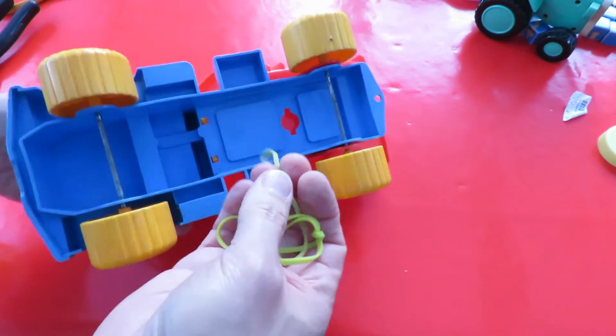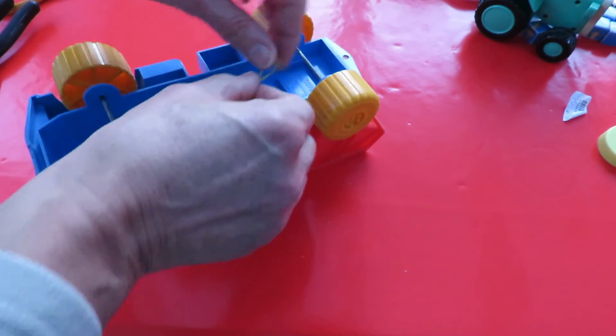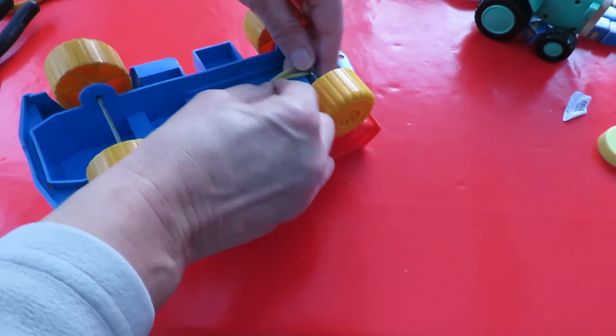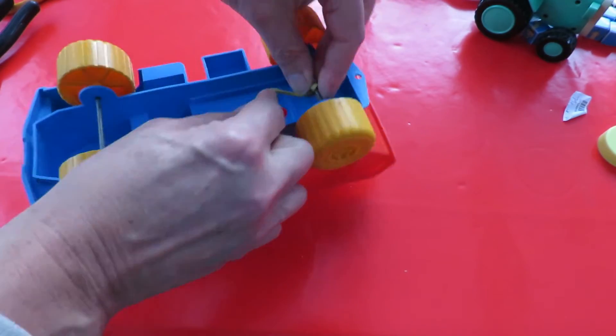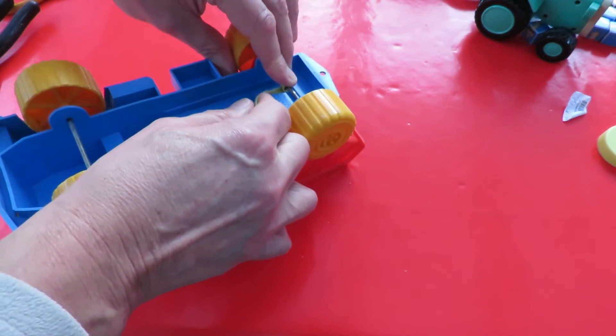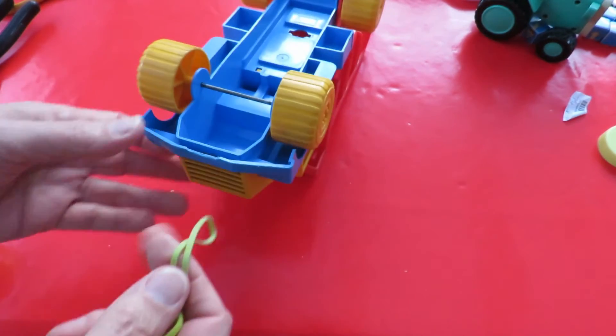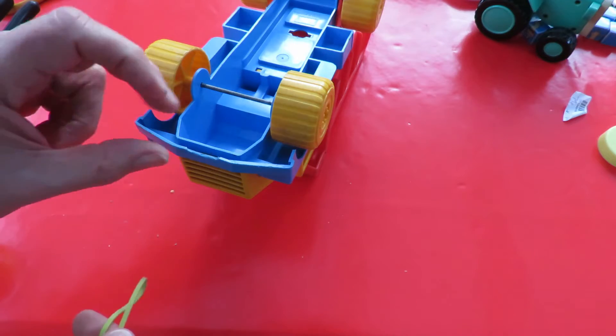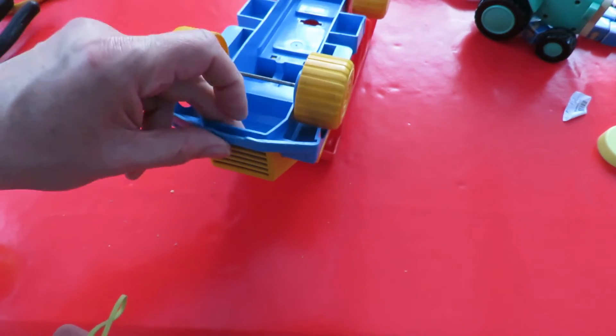Rubber band around the back axle is easy enough, just wrap it around itself so it grips itself and then wind it up. The question is where do we attach it at the front? I don't really want to go drilling holes in it at the moment.